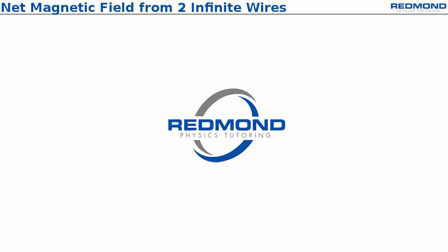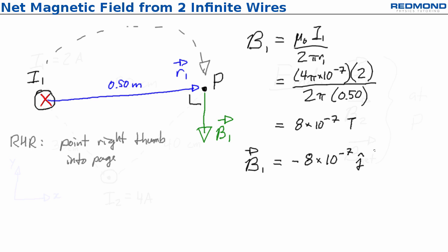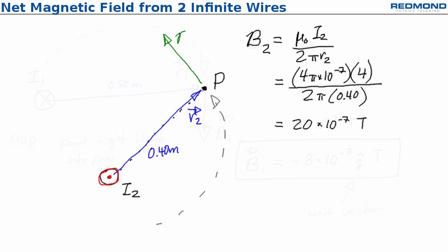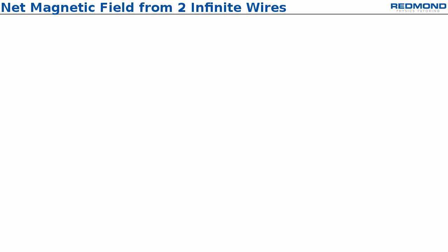Hi, I'm Scott from RedmondPhysicsTutoring.com. In this video I'll show you how to apply the Biot-Savart result for an infinite wire to find the magnetic field at a given point from each of two separate current-carrying wires, and I'll show you how to add those up to get the net magnetic field.